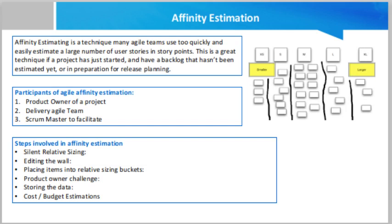In the product owner challenge step, the product owner may discuss the sizes with the team. If the team decides to change the size of a story, they remove it from the wall and place it according to the revised size based on discussion. After the entire team finalizes the estimates, the data is stored and the affinity estimation is documented, completing the process.